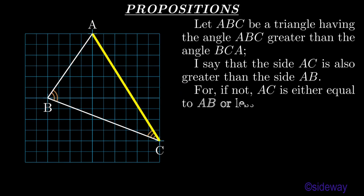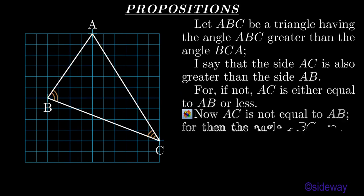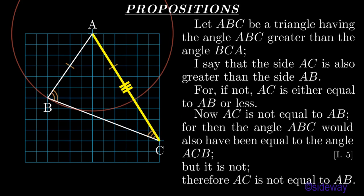For, if not, AC is either equal to AB or less. Now, AC is not equal to AB. For then the angle ABC would also have been equal to the angle ACB, by Book 1 Proposition 5. But it is not. Therefore AC is not equal to AB.